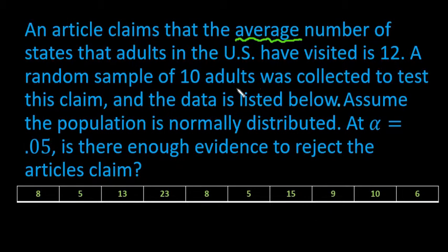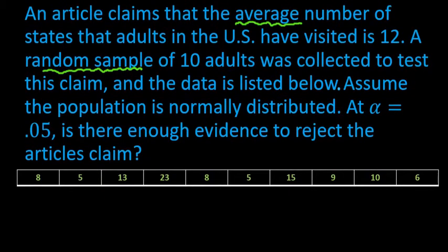If we read through further, we know that we have a random sample. So that is something we have to have. That's one of our conditions. We have a random sample of 10 adults.